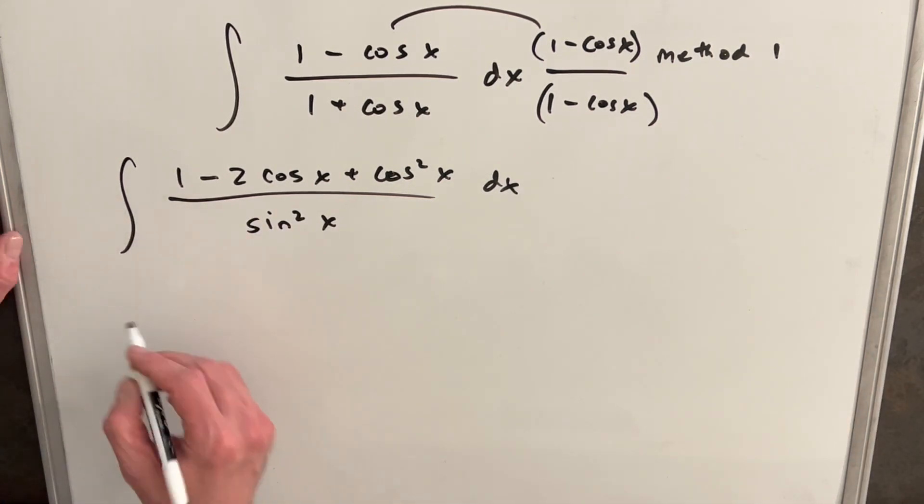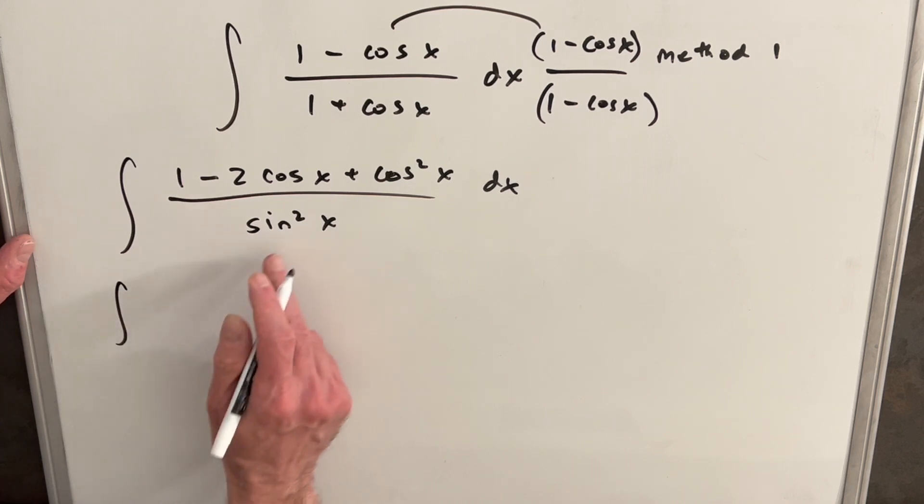And then I'm just going to divide sin² into each term, and we're going to get three separate integrals. So the first one, 1 over sin² x, is going to be csc² x.